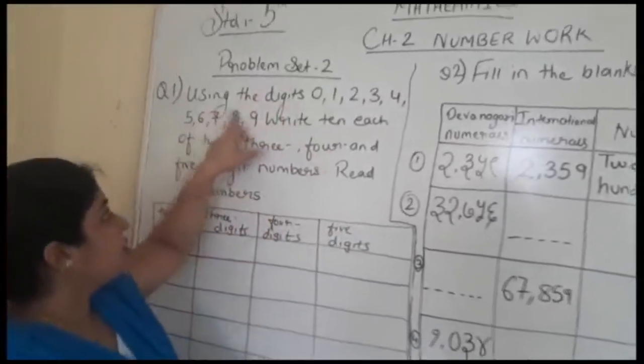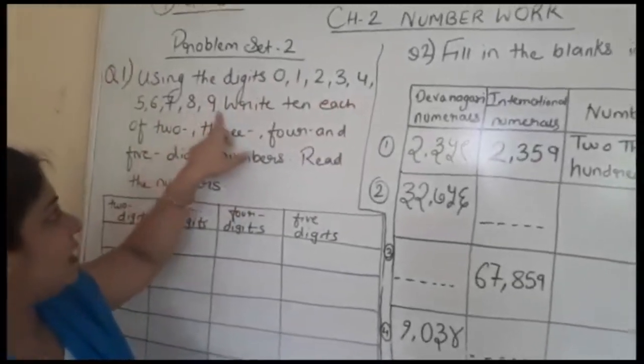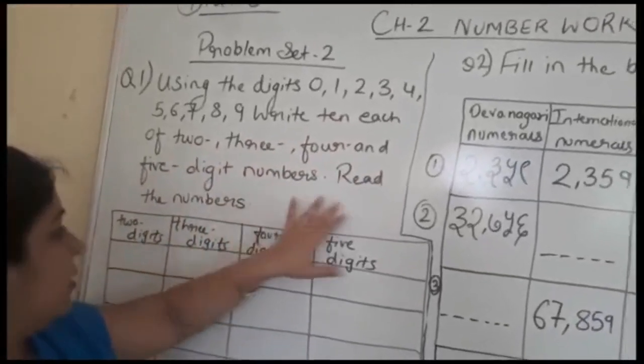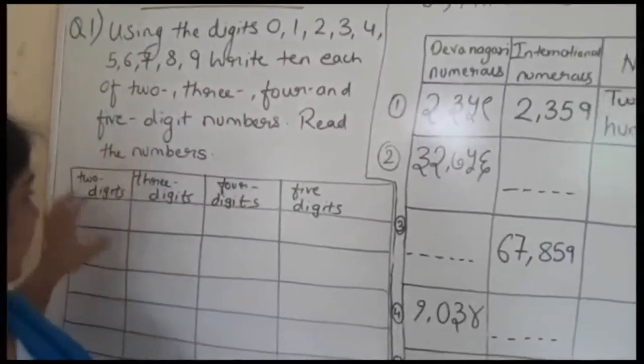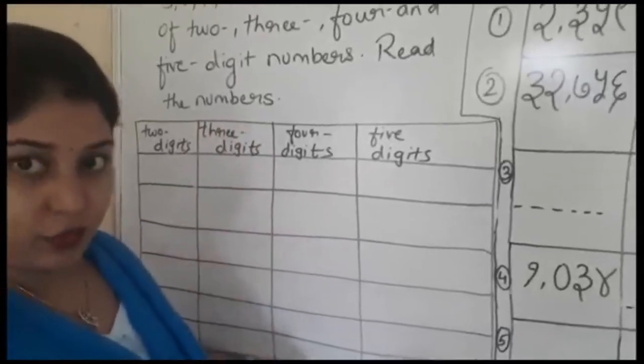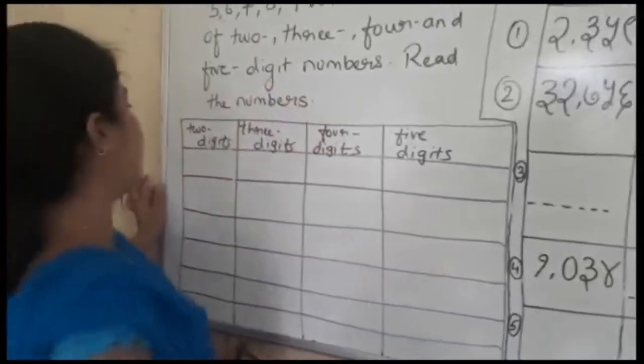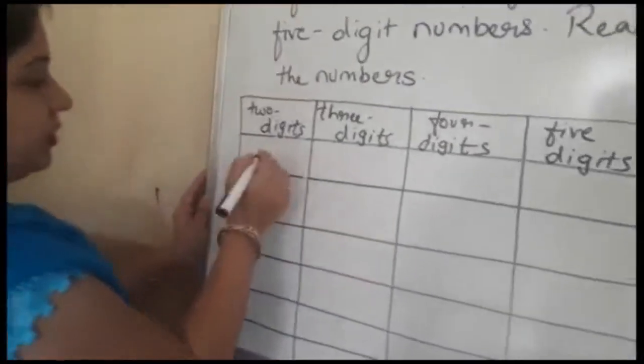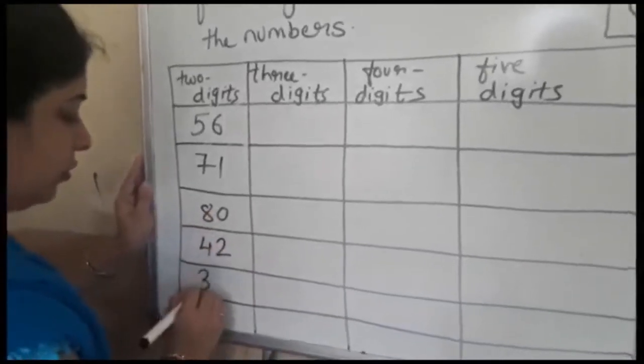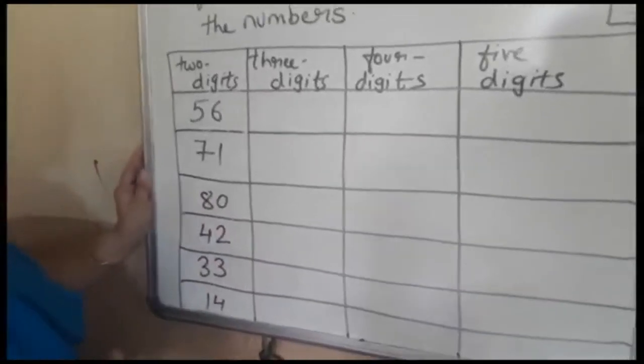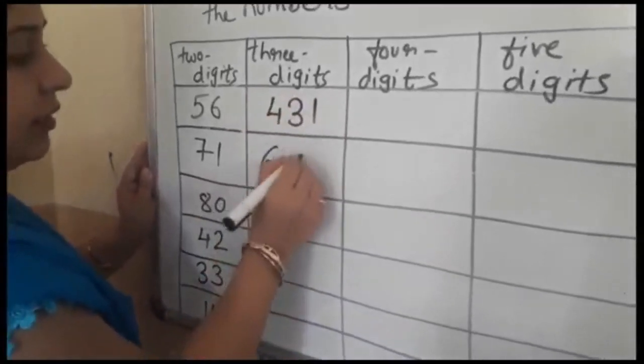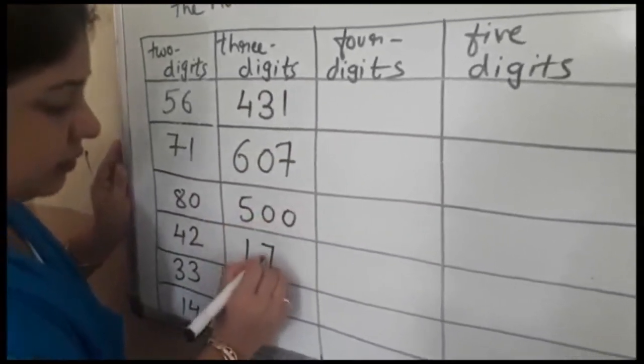Problem set two: Using the digits 0, 1, 2, 3, 4, 5, 6, 7, 8, 9, write ten each of two digits, three digits, four digits, and five digits numbers, and read the numbers. I will write six of each, you have to write the rest. Two digit numbers contain two numbers, suppose 56, 71, 80, 42, 33, 40. Three digit numbers contain three numbers: 431, 607, 500, 173, 444, 963.